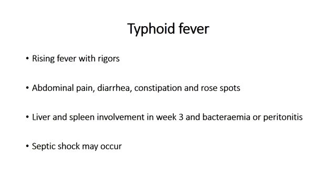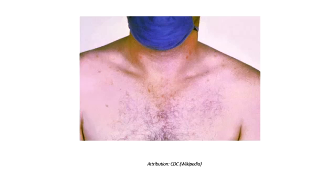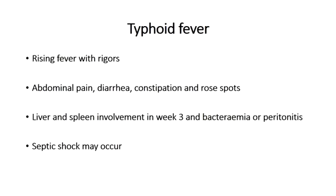Typhoid fever has a number of characteristics. Patients complain initially of a rising high fever with rigors. They may then develop abdominal pain and a particular rash known as rose spots — faint erythematous or salmon maculopapular lesions, particularly seen on the abdomen and upper body. In the third week of illness, if the disease spreads from the GI tract, one can see involvement of the liver and spleen where hepatosplenomegaly may be seen, along with bacteraemia and peritonitis.